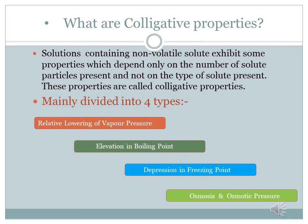Such properties are called colligative properties. The solutions containing non-volatile solutes — the solute we are going to mix in the solvent is non-volatile — exhibit some properties that depend only on the number of solute particles but not on their quality. These colligative properties are mainly divided into four types: relative lowering of vapor pressure, elevation of boiling point, depression in freezing point, and osmosis and osmotic pressure.